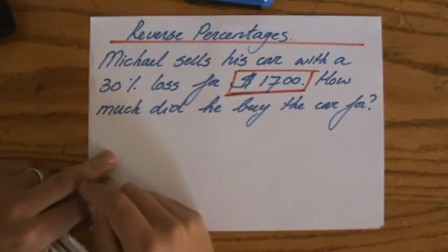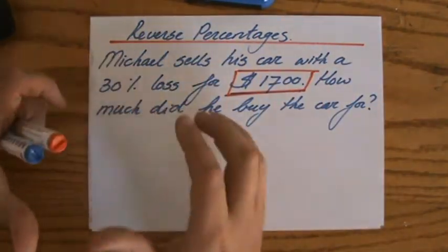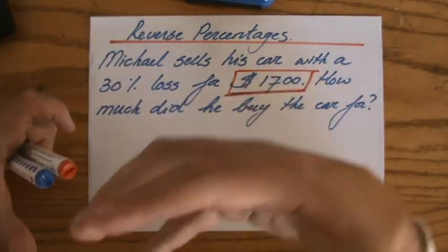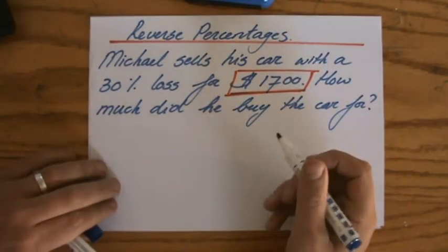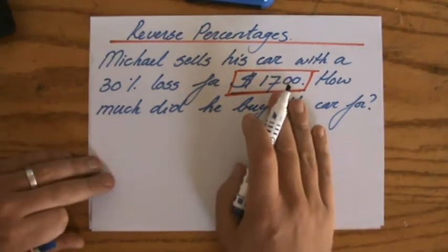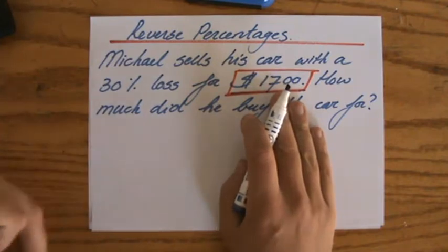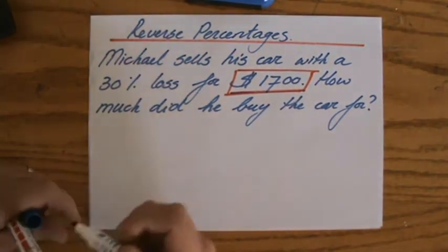I'm not going to find 30% of $1700, because this is the price after a 30% loss. What was the original price? That is the question. I have to find out how much percent this value is of the original price.